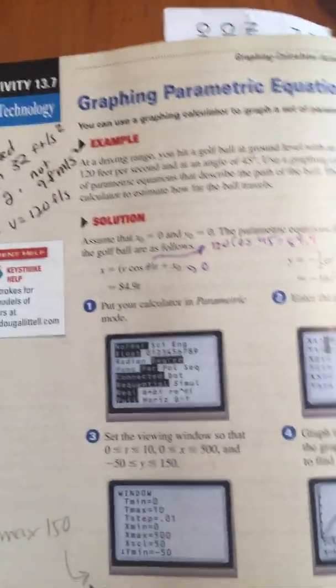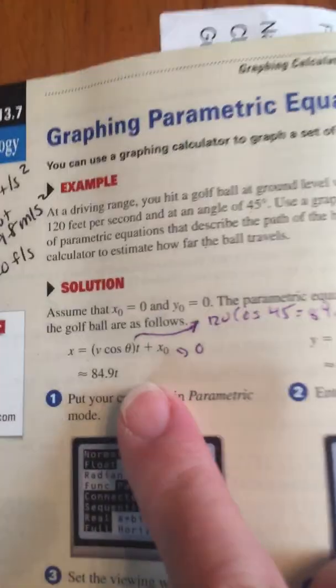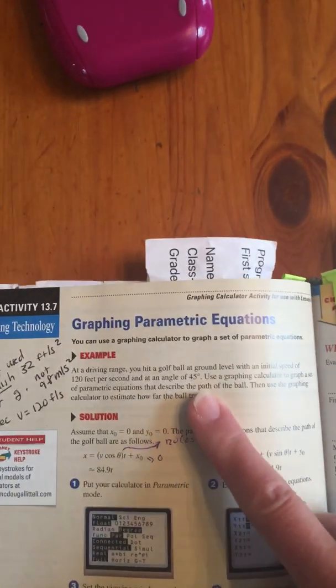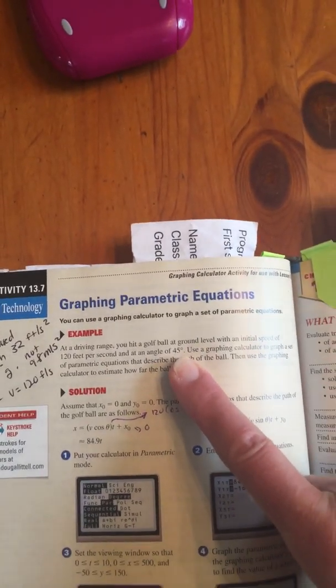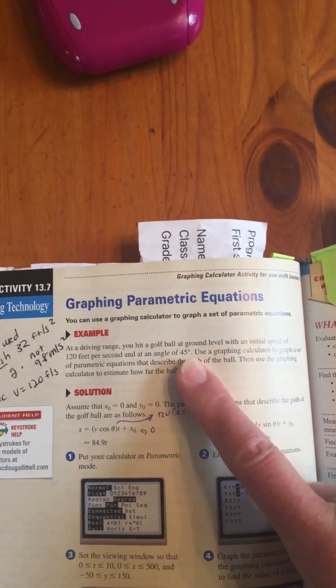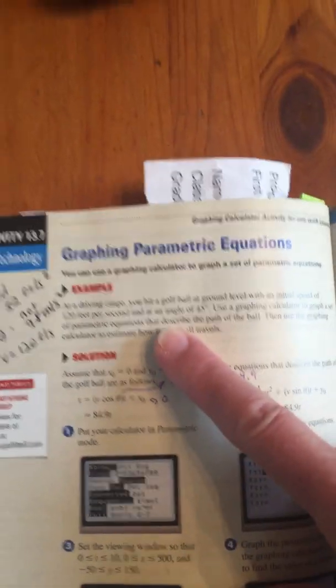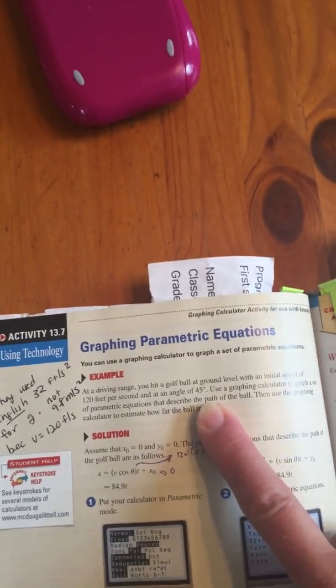These are called parametric equations. At a driving range, you hit a golf ball at ground level with the initial speed of 120 feet per second at an angle of 45 degrees.